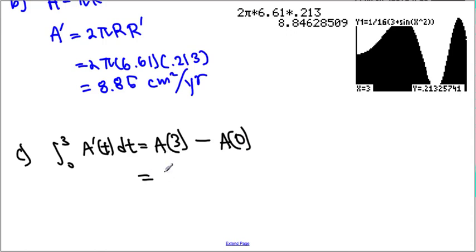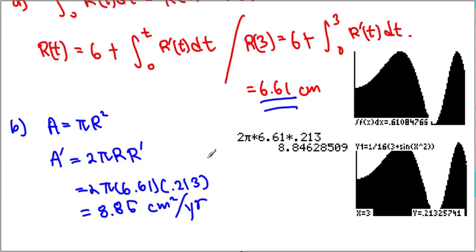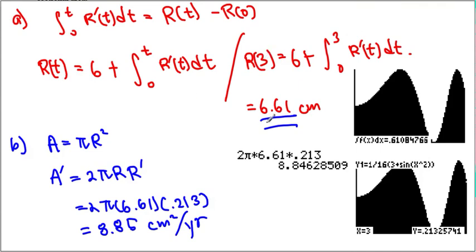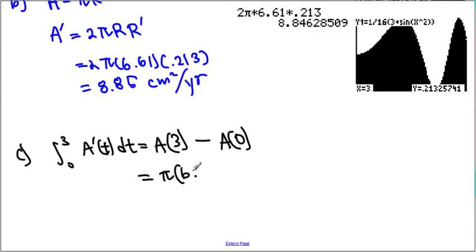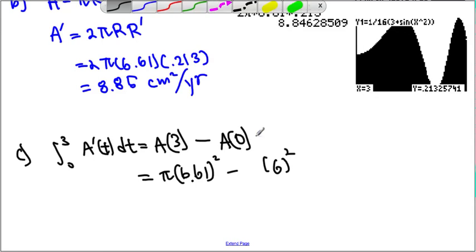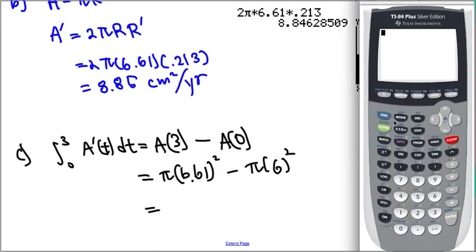A of 3 is when we're going to have pi. What's the value of r? When t was equal to 3, the radius was 6.61, so we're just going to have 6.61 squared minus pi times 6 squared. Then, what do we end up getting? Let's try to look into that together. Using the calculator, we have pi times 6.61 squared minus pi times 6 squared.